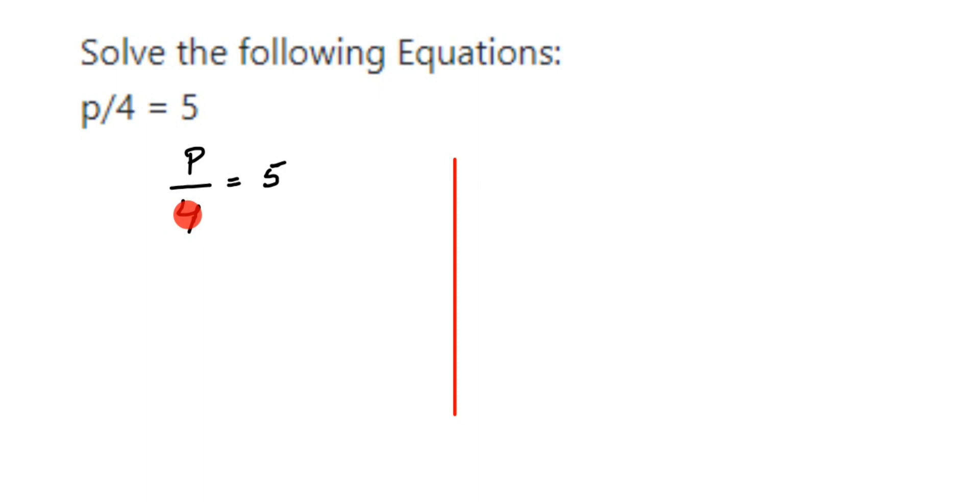Division means multiplication, multiplication means division. Similarly, if a number is in addition, to remove it we subtract it. If it's in subtraction, we use addition - vice versa. So I'm going to multiply 4 on both sides. p divided by 4 multiplied by 4 equals 5 multiplied by 4. This 4 and this 4 will get cancelled, so p equals 5 times 4, which is 20. This is called the balancing method.